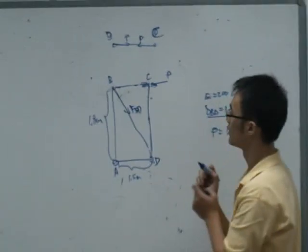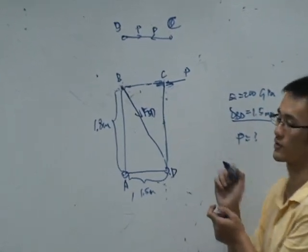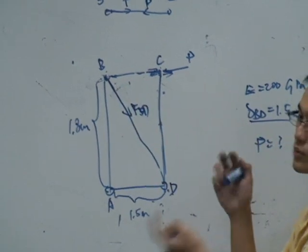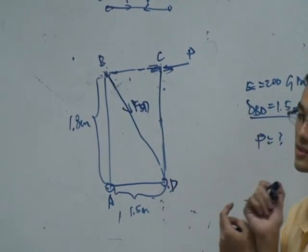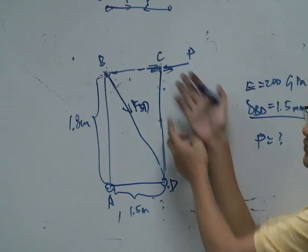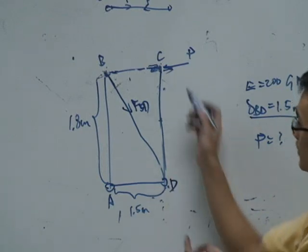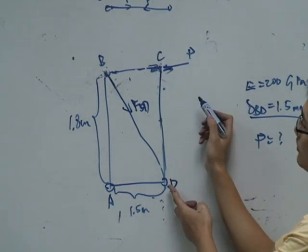In fact, this force, the horizontal force given by CD to BC should be zero. Why? The horizontal force, we assume here there is a horizontal force given by CD to BC because we cannot confirm. We assume that it is, but we need to prove that this one is actually zero.